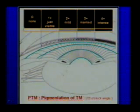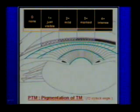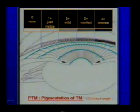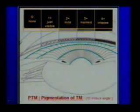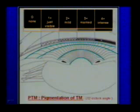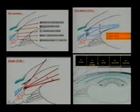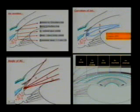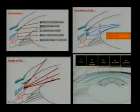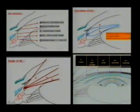Then the amount of pigmentation seen at the 12 o'clock position is recorded across five stages: no pigments, just visible, mild pigmentation, marked, or intense pigmentation. So depending on these factors — the iris insertion, the angle, the curvature of the iris, and the amount of pigmentation at the 12 o'clock position — we can document the gonioscopy findings.